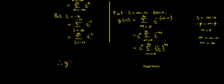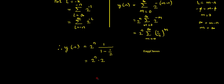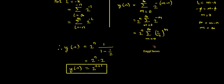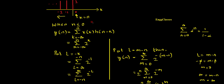Applying the result of the standard geometric series with alpha equal to 1/2, I get y of n equal to 2 to the power n times 1 divided by (1 minus 1/2), which equals 2 to the power n times 2, giving y of n equal to 2 to the power n plus 1 for n less than or equal to 0.